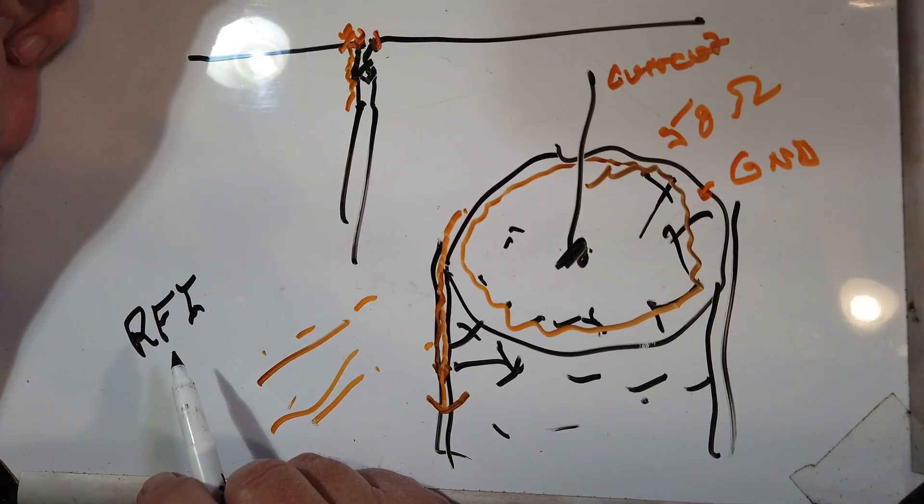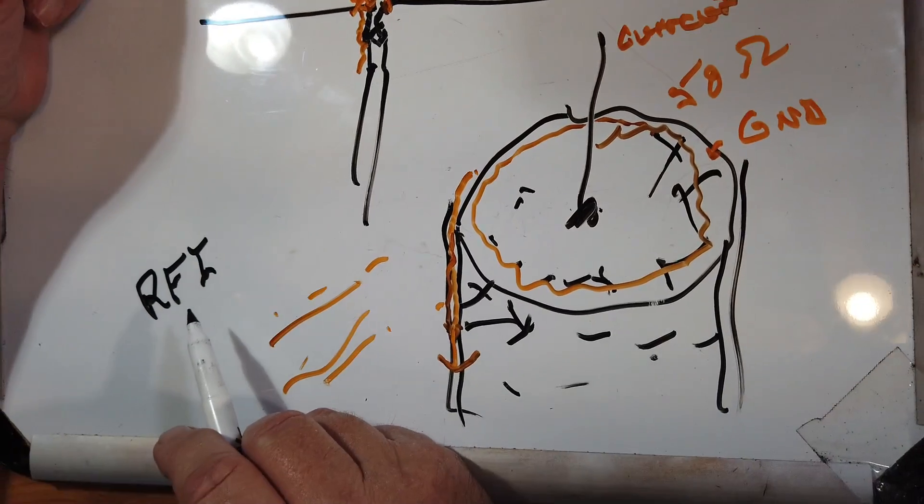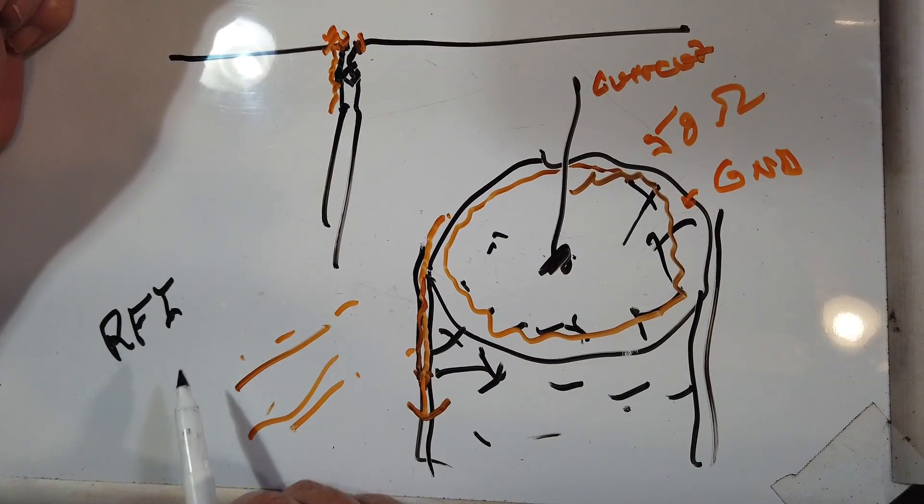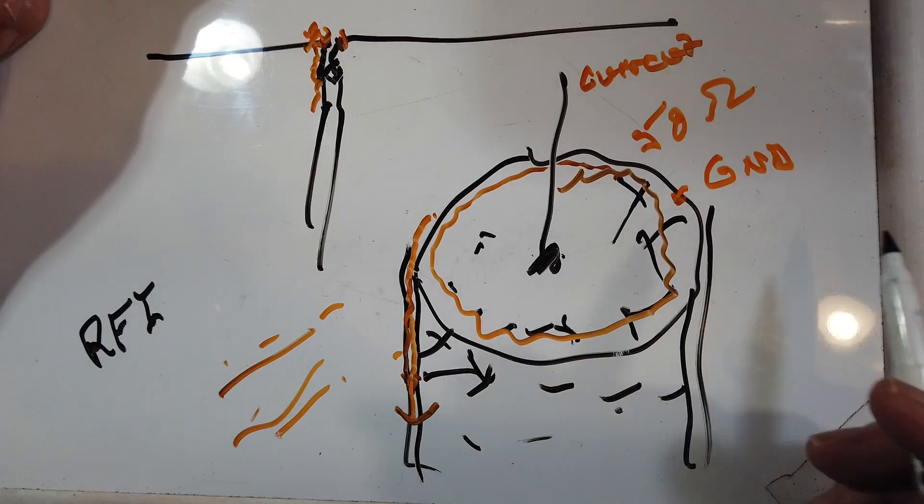you get odd behaviors out of the radio. Or if you're doing code, you get unsent dits, it starts to misbehave, and so on. That's a good way of recognizing RFI.